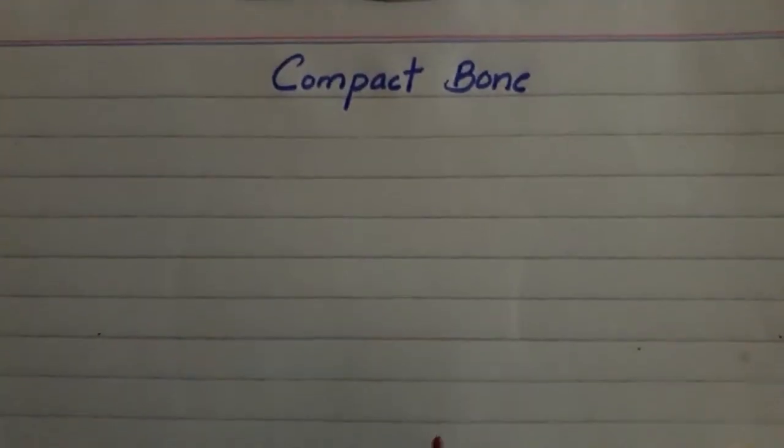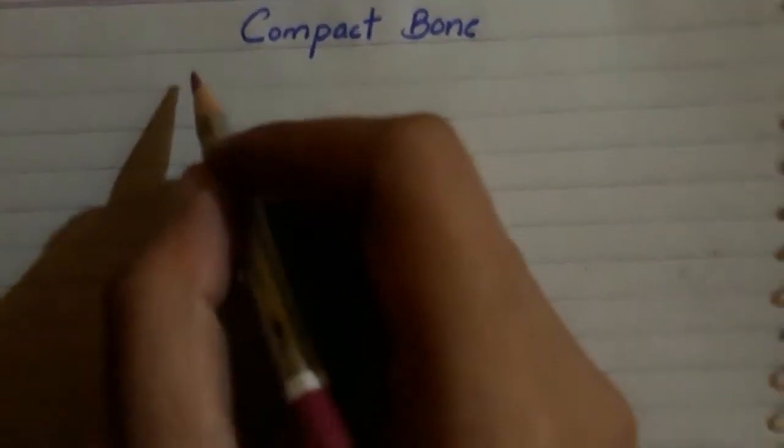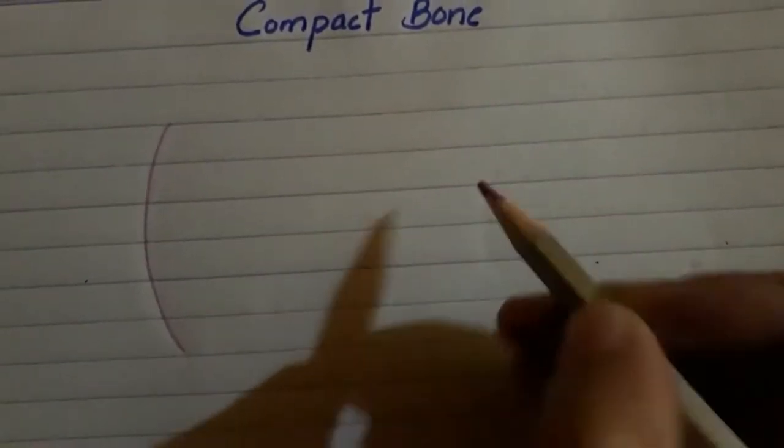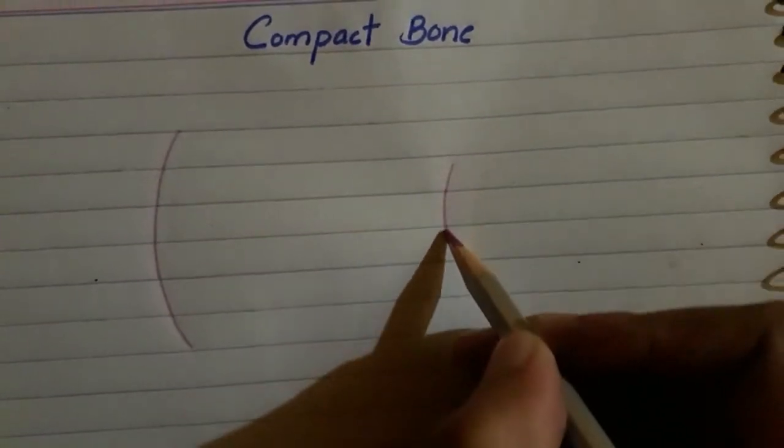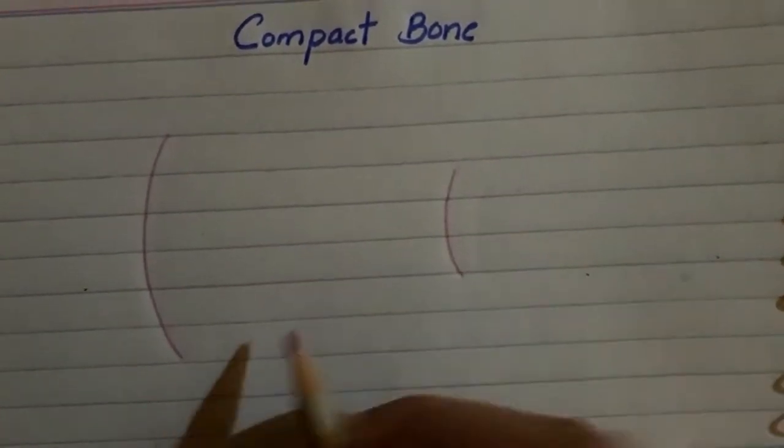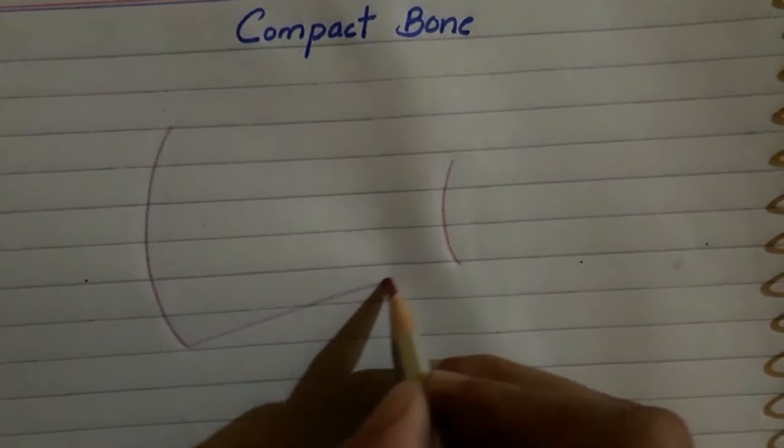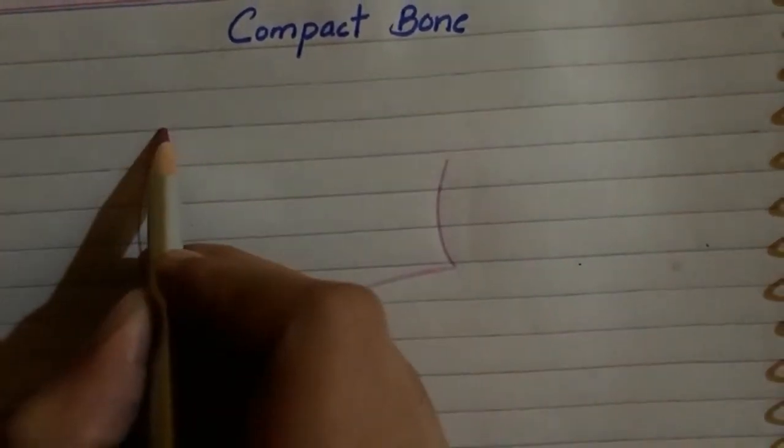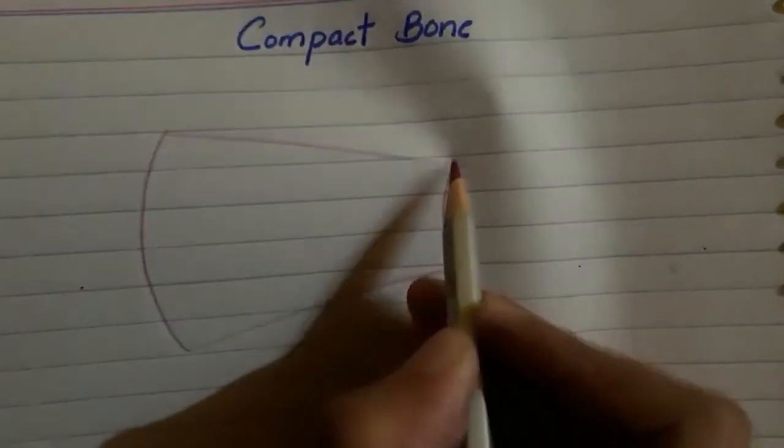Okay, so compact bone and Haversian arrangement is very easy. First of all, we will draw this line and draw a small line and we will connect like this and like this.